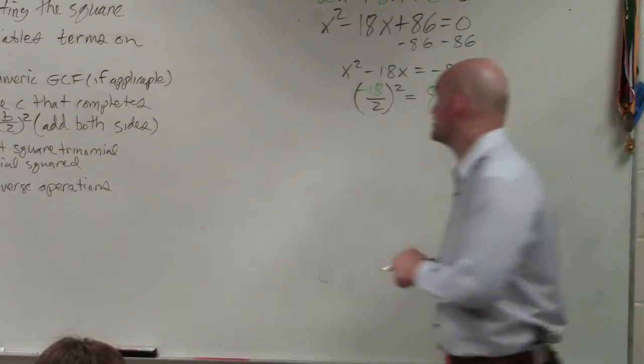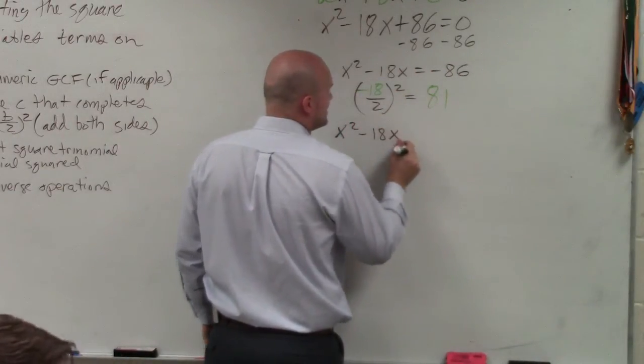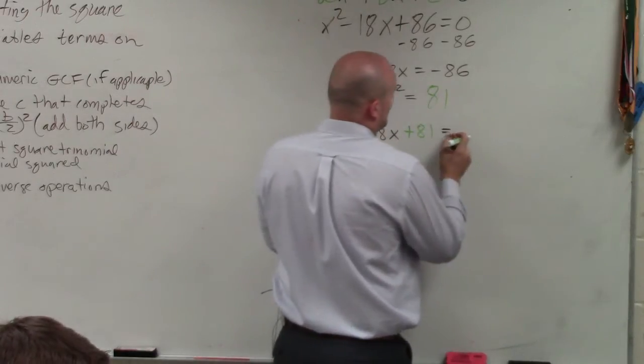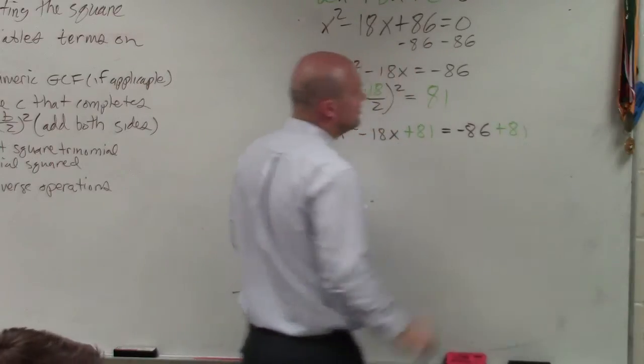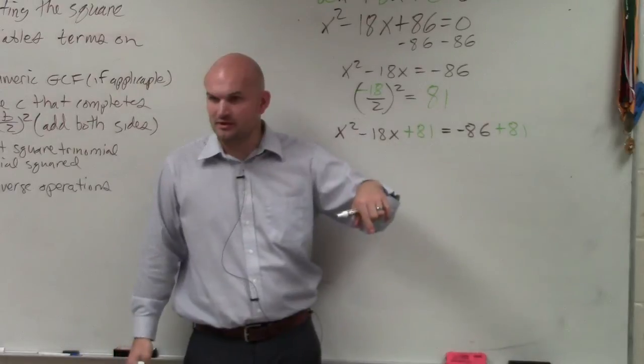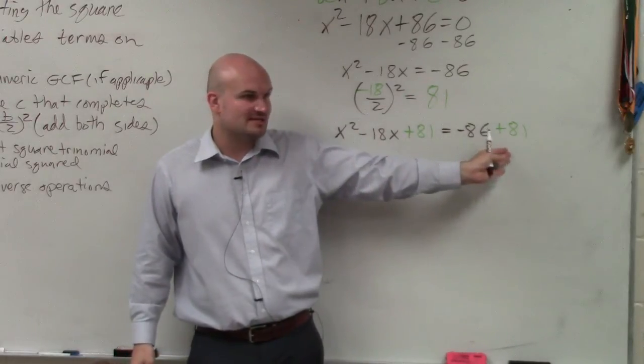Then I add that to both sides. Now, why do you add that to both sides? That's because of the property of equality. Remember, ladies and gentlemen, whatever you do to one side, you have to do to the other side. So if you're adding 81 to the left side, you have to add 81 to the right side.